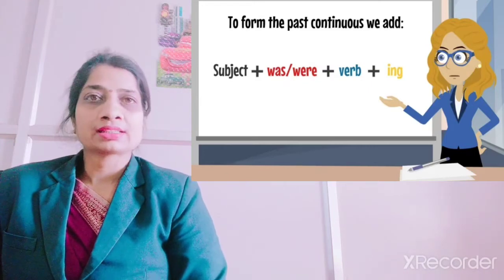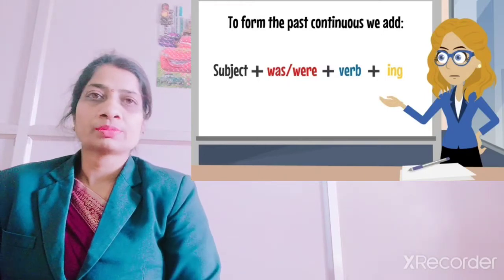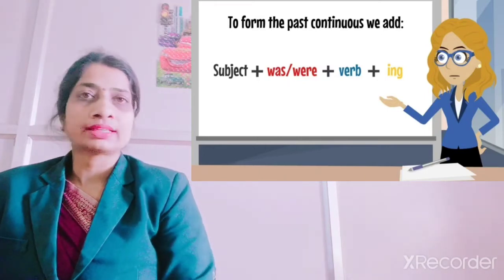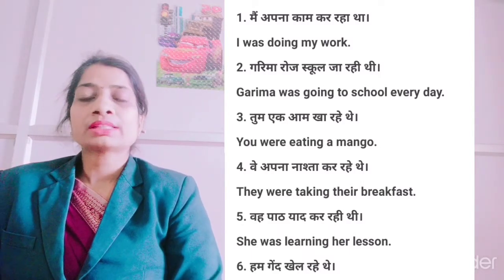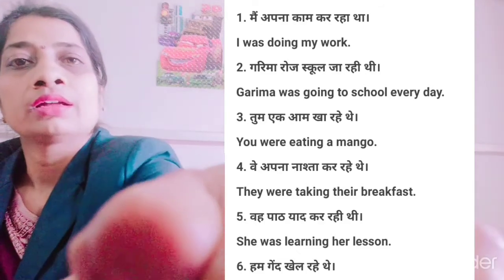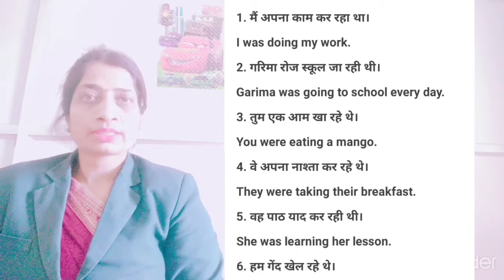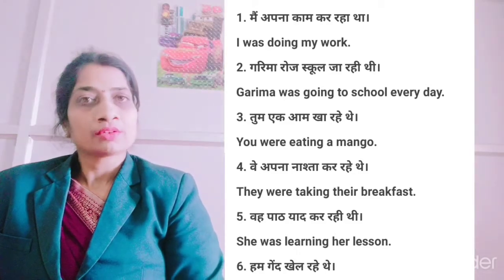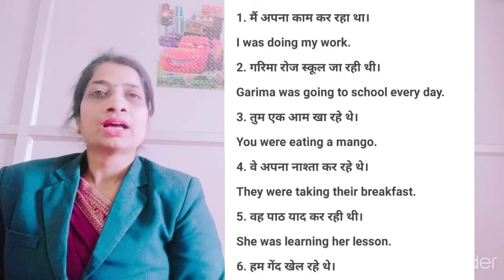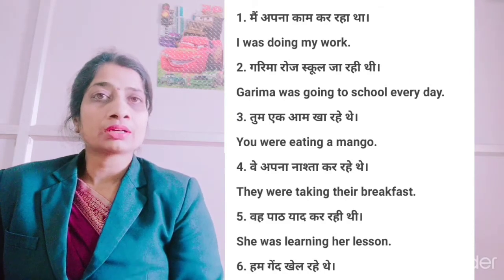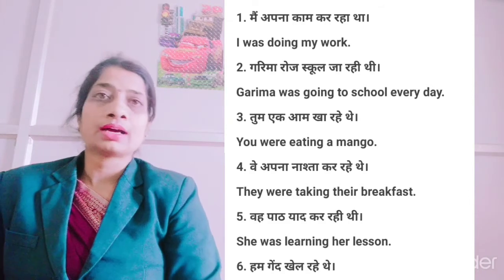Now look at the sentences in past continuous tense — maine same hi sentences liye hain, taaki aapko difference pata chale. 'I was doing my work' — it means mein apna kaam kar raha tha. Past mein kar raha tha. Ab jahaan formula mein was or were — yahan par humne 'was' likha hai. Present mein mein 'I am doing my work' — mein apna kaam kar raha hoon — woh present tha. Aur yeh past mein hai — mein apna kaam kar raha tha.